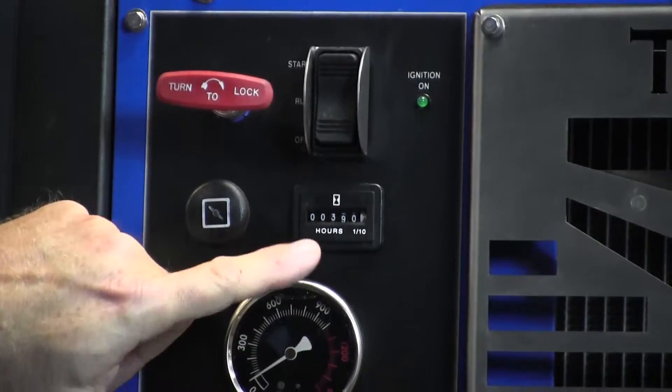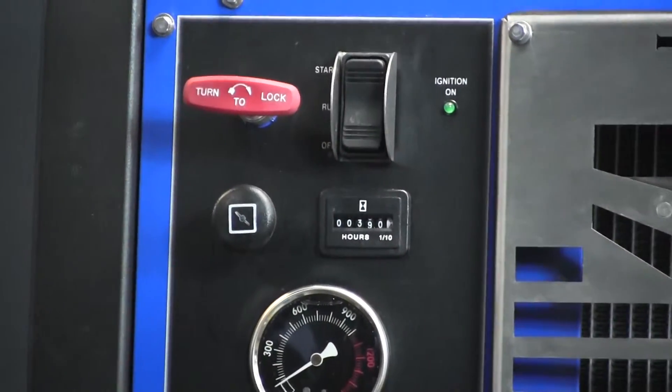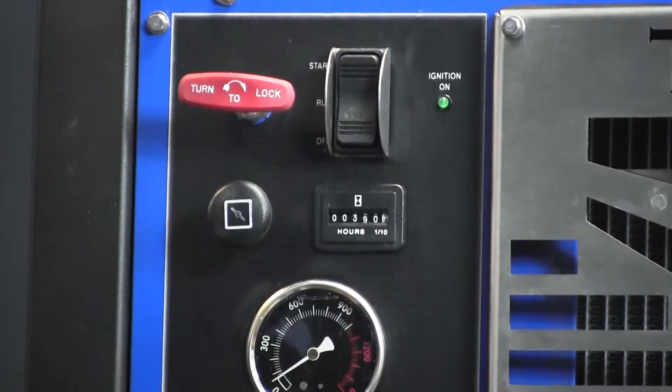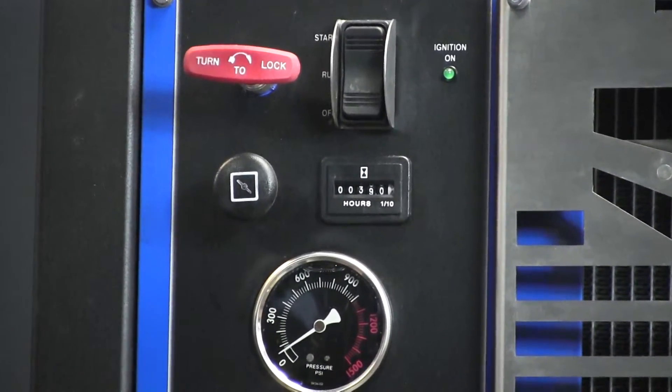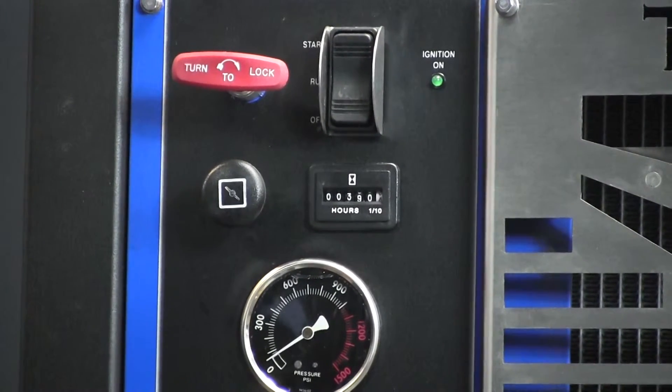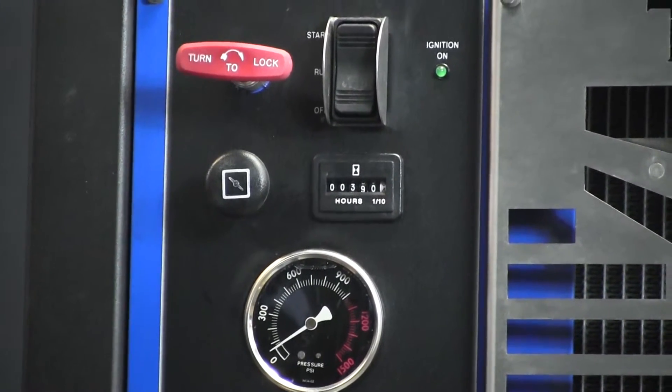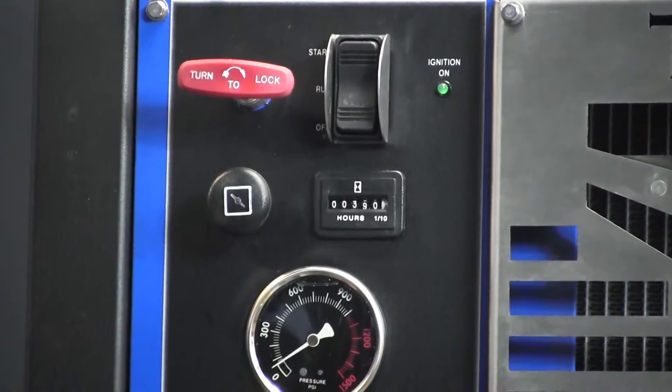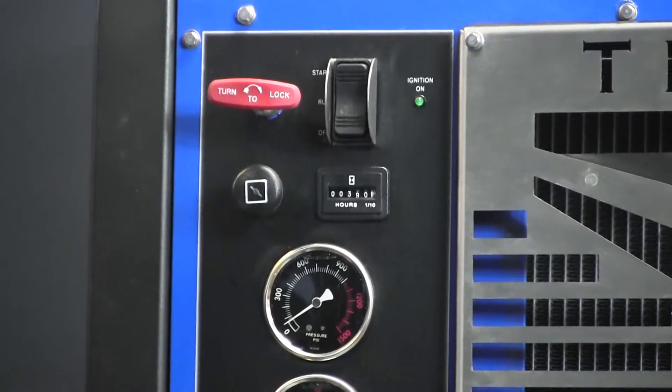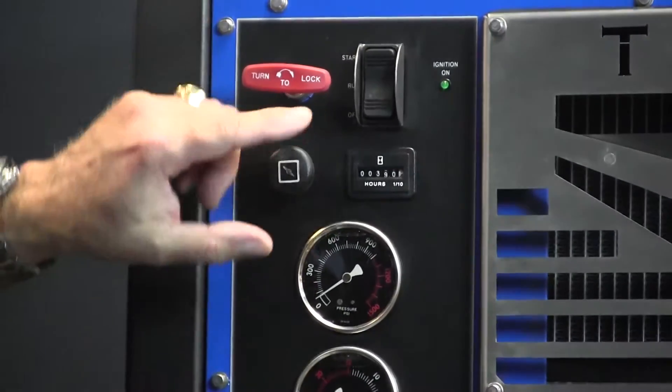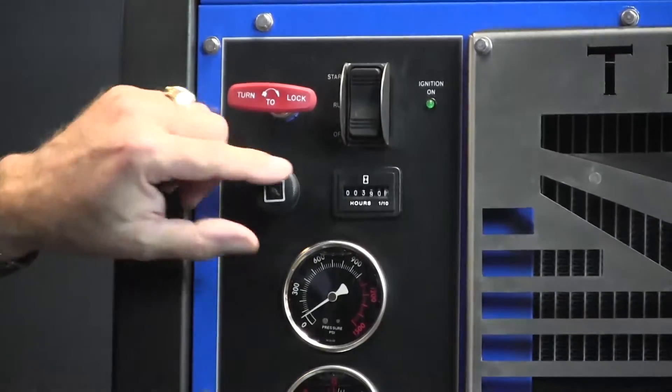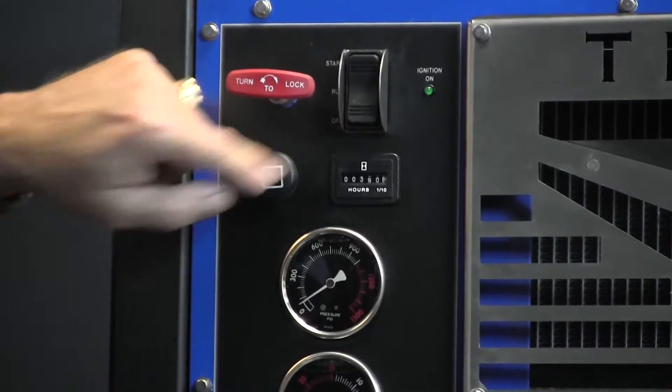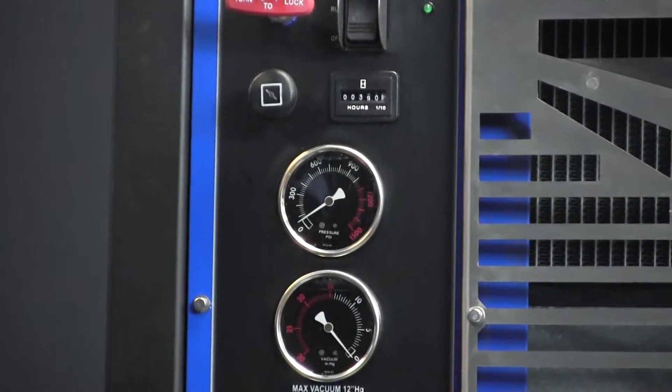An important part on our front panel is our hour meter. It keeps track of how many hours the machine has been running, but we can also use it to track our maintenance schedule. Many maintenance schedules are based on how many hours a particular unit is running, whether it's the blower, the high-pressure pump, or the engine. Some months will be busier than others, so you can keep track of your hours here and that relays into our maintenance.